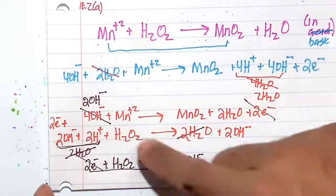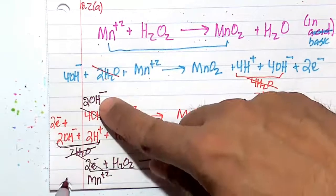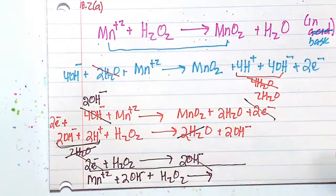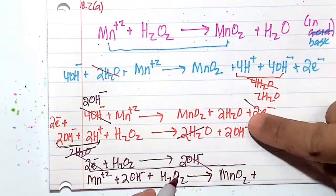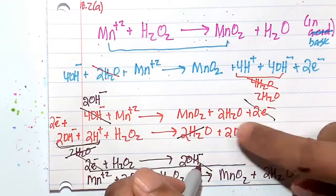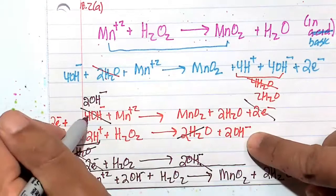So it's going to be Mn+2 plus 2OH- plus H2O2. And that's going to go to MnO2 plus 2H2O. Remembering now that these two OH-s cancel out with those four OH-s, leaving us with no OH-s in the product side.